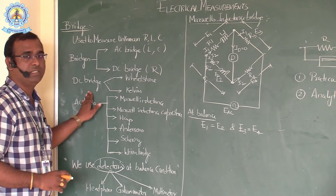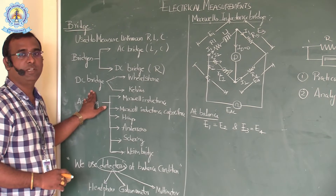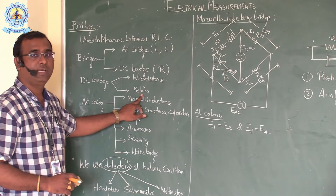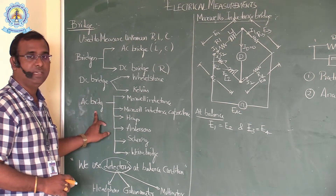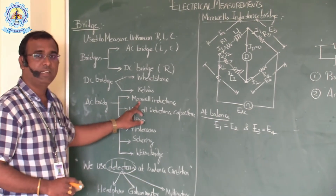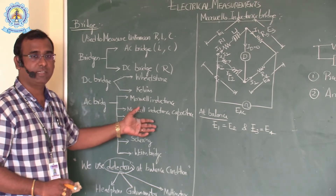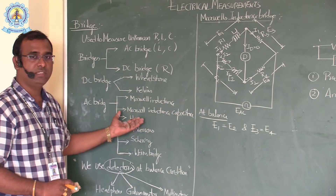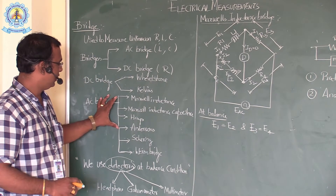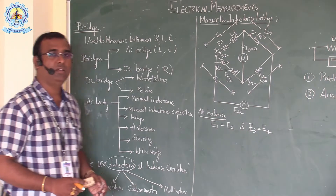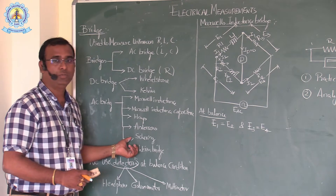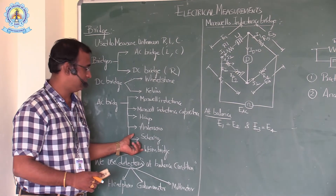For the DC bridge, there are two types: the Wheatstone bridge and the Kelvin's bridge. For AC bridges, there are a wide variety of bridges available — Maxwell's inductance bridge, Maxwell's inductance-capacitance bridge, Hay's bridge, Anderson's bridge, Schering bridge, and Wein's bridge. The top four give the unknown value of inductance and the bottom two give the unknown value of capacitance.